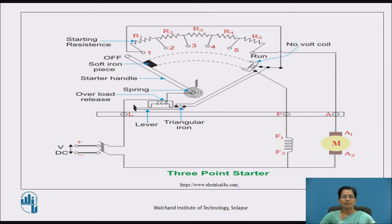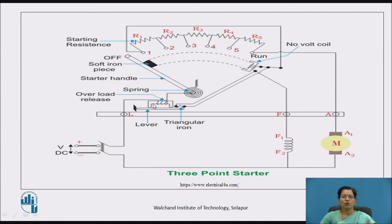This is the 3-point starter. The name '3-point' is given because there are 3 terminals: L, F, and A — where L is connected to the supply voltage, F is connected to the field winding of the motor, and A is connected to the armature winding. The different parts include the resistance connected in series with the armature winding, the arm or starter handle, spring, lever, and a triangular iron provided for the overload coil. This is the no-volt coil, and this is the off position.